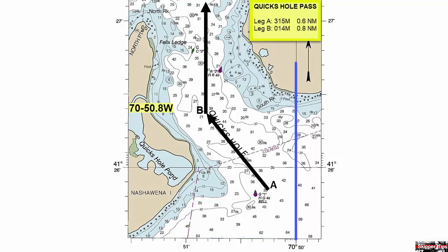We want to write that in a non-navigable portion of the chart in big bold letters as shown here. When we arrive abeam of lighted bell buoy number one, we will be on a course of 315 degrees magnetic and start to monitor our GPS longitude. When our GPS longitude equals 70 degrees 50.8 minutes west, we will change course to the north.